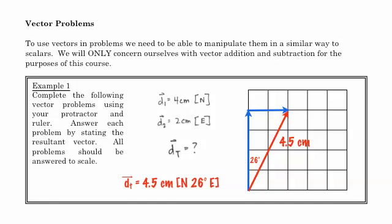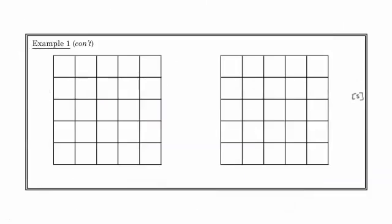This is the way that we'd represent the answer. We'd say the total displacement of this vector, or the total vector, is 4.5 centimeters, and this would be represented by north 26 degrees to the east.